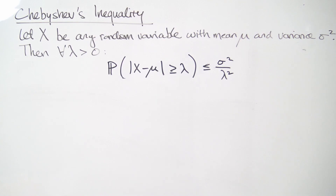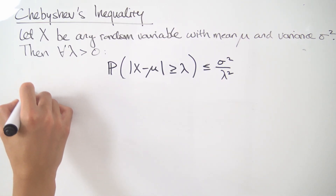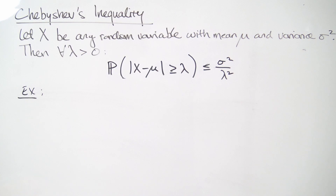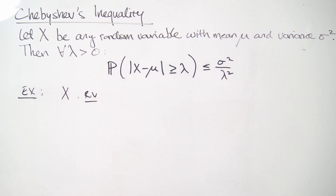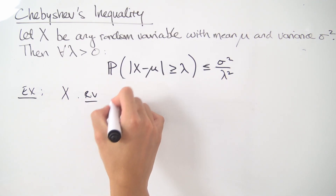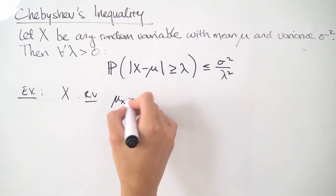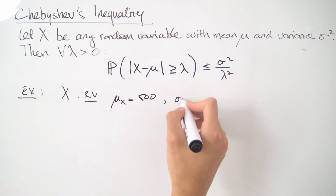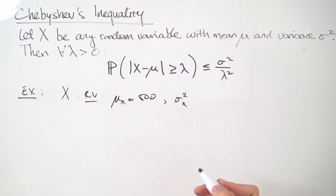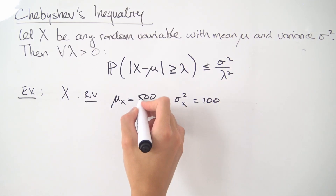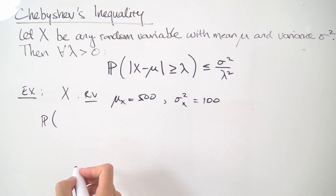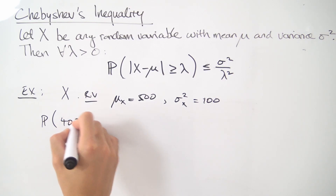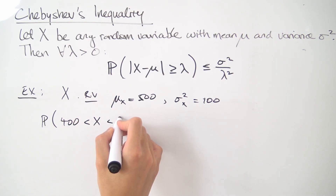So that's Chebyshev's inequality — let's take a look at a quick example to finish off this video. Suppose we have a random variable X with a mean of 500 and a variance of 100. The question is: find the probability that 400 is less than X is less than 600.